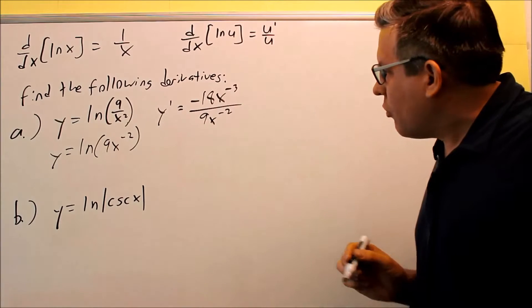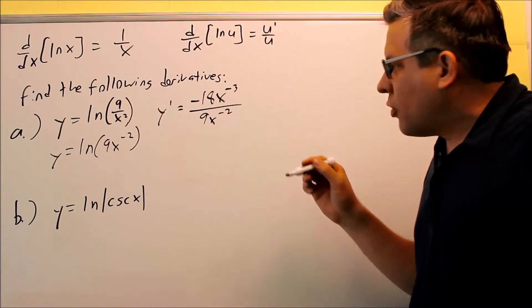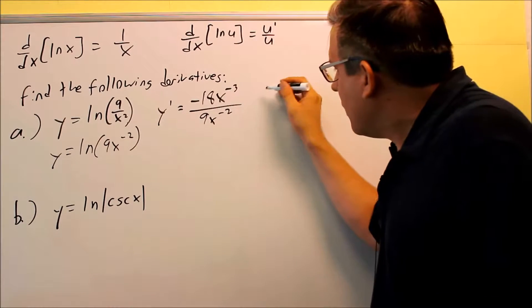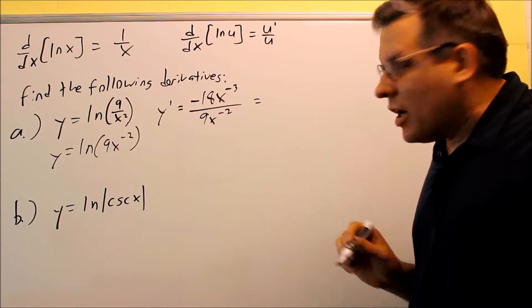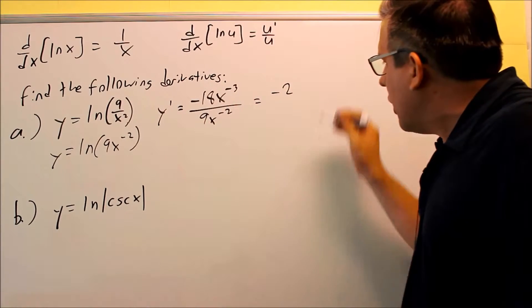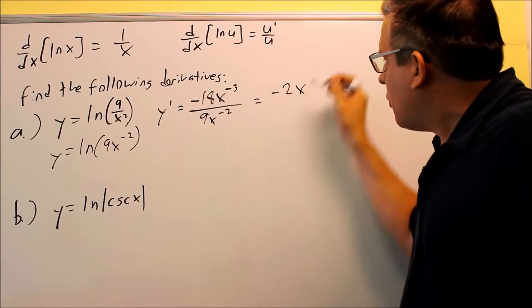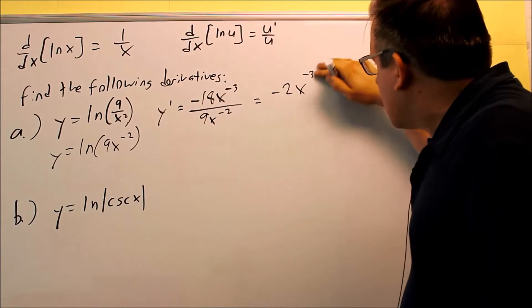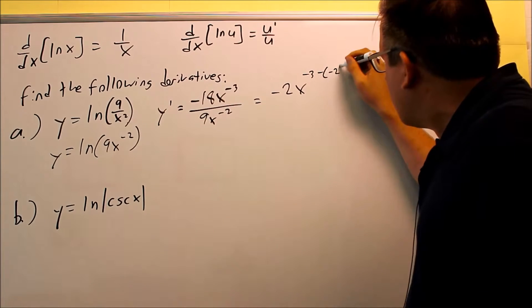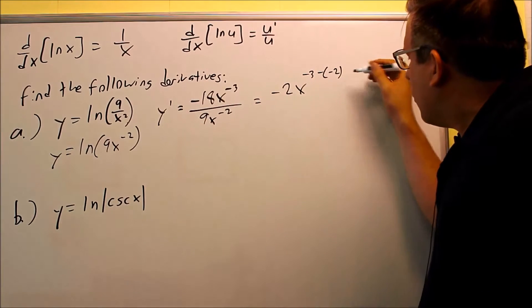Okay, so now we have it in that form. We need to use some exponent properties for simplifying here. So the way we can do that is, first of all, negative 18 divided by 9 is negative 2, and then we just have to deal with the exponent. You're taking the top one minus the bottom one, so negative 3 minus negative 2, and that's going to leave you with negative 1.